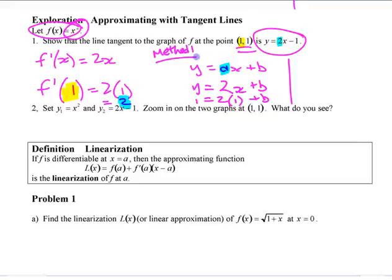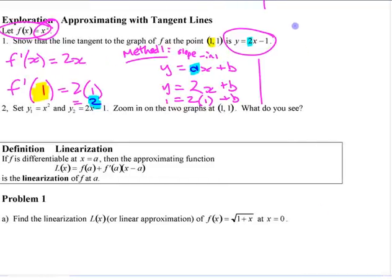So we can call this method 1, slope-intercept form. I would say method 2 is point-slope form where you can write it right away. Point-slope form is basically thinking if it passed through the origin, once you find the slope is 2, a line through the origin is y equals 2x.